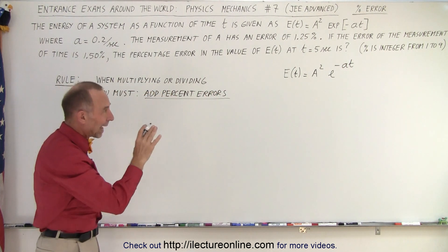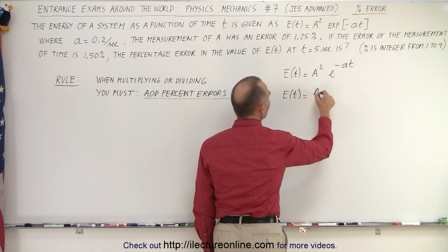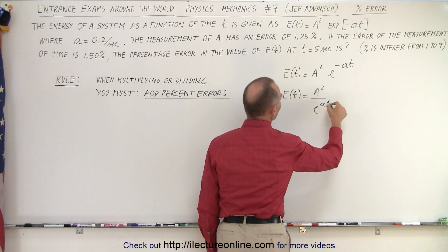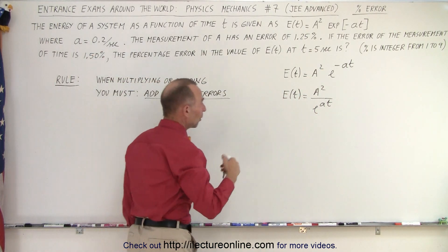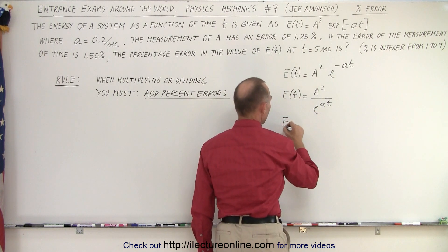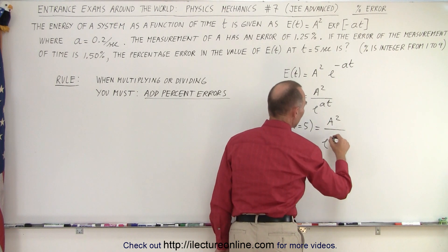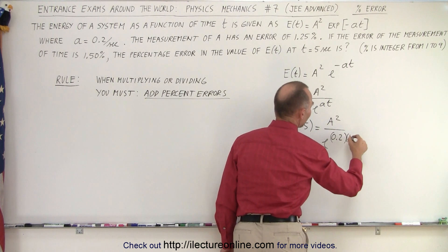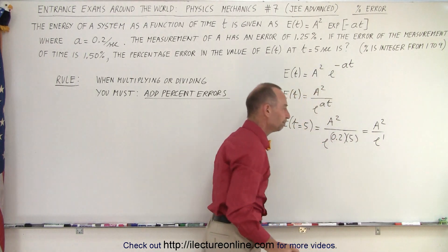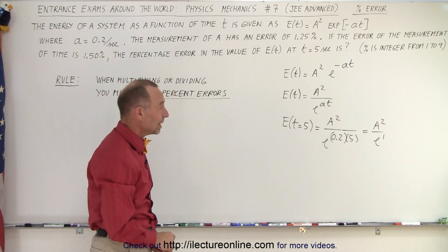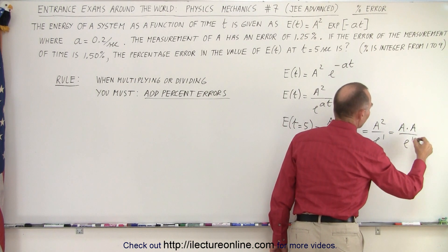Let's take another look at that equation. We can write E as a function of t as a squared divided by e to the a times t. Now if time is 5 seconds and a is 0.2 per second, plugging those in gives E(5) equals a squared divided by e to the 0.2 times 5, which equals a squared divided by e to the first power — or simply a times a divided by e.